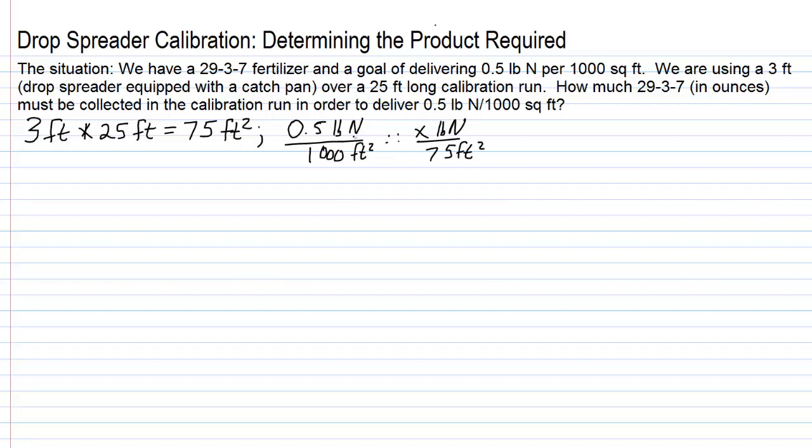And again, same units, pound N, pound N, square feet, square feet, so this is a fair proportion to make.